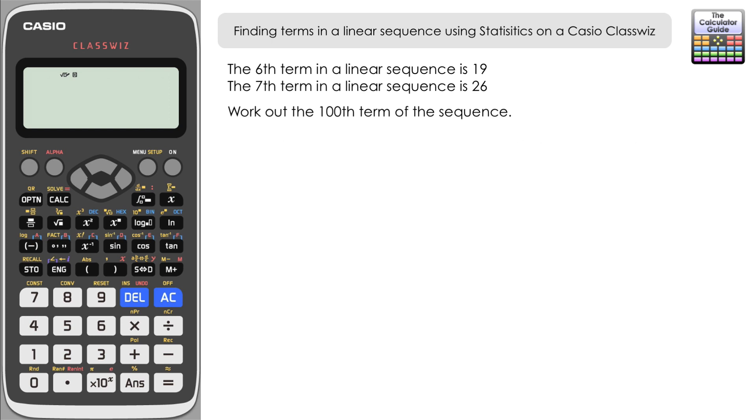So let's take a look at what we've got to do. The sixth term in a linear sequence is 19, the seventh term in a linear sequence is 26, and we've got to work out the 100th term.